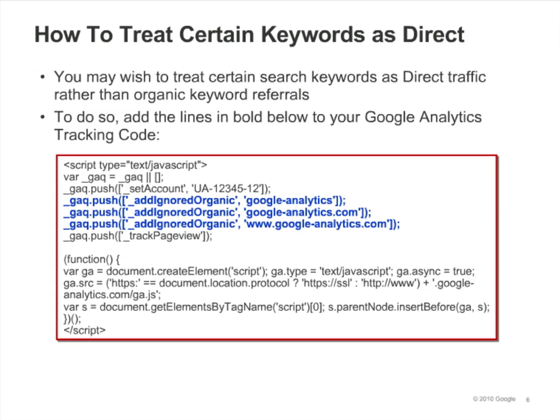You may wish to treat traffic that results from certain search keywords as direct. For example, if someone searches for the exact name of your site, you may want to treat that visit as a direct visit instead of a search. To do this, simply add a call to AddIgnoredOrganic in your Google Analytics tracking code and specify the keyword as the argument.